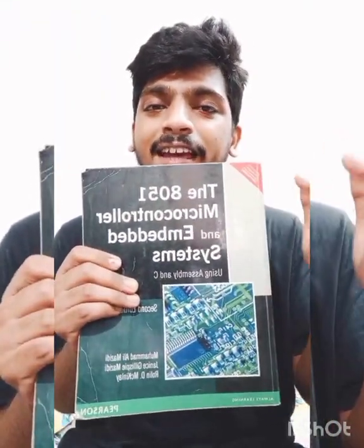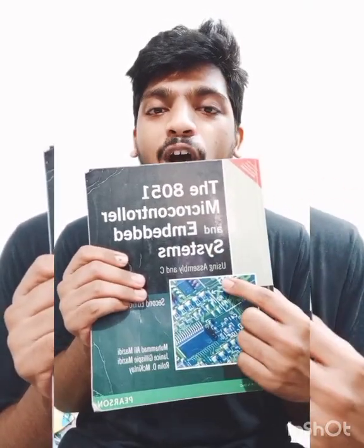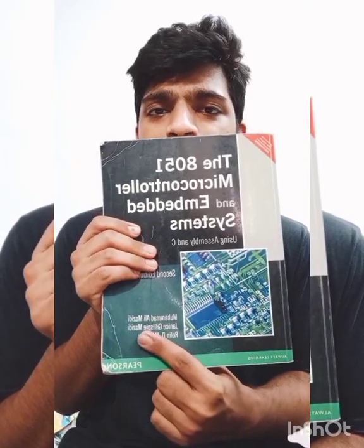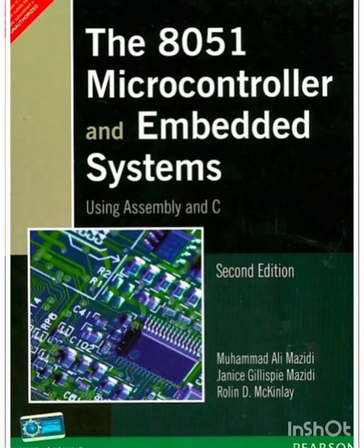For learning microcontrollers and microprocessors, I recommend the book 'The 8051 Microcontroller and Embedded Systems' with C and Assembly Language, by Mazidi. I bought this book for 400 rupees. It covers 8051 and microprocessor topics including interfacing with devices like timers, counters, LCD, and more. You'll also learn assembly language alongside C programming, which is an added advantage.